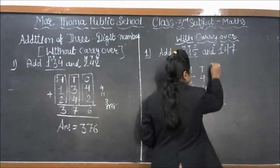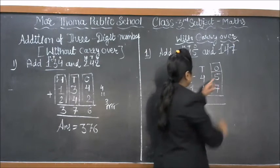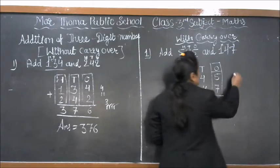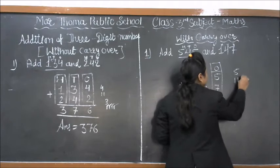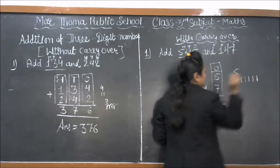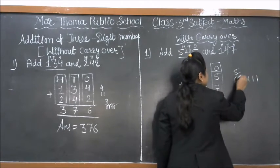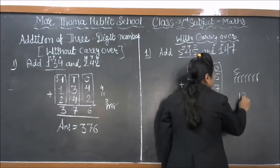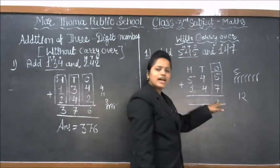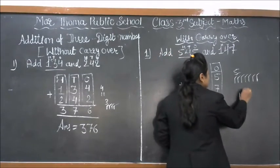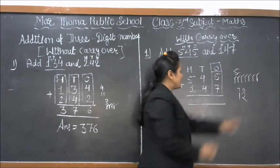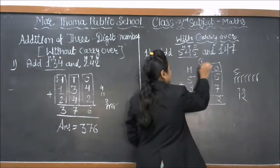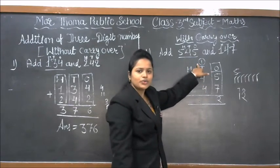First we add the ones column: 5 plus 7. Keep 5 in mind and draw 7 lines: 1, 2, 3, 4, 5, 6, 7. Counting on from 5: 6, 7, 8, 9, 10, 11, 12. So we have 12. The digit 2 goes in ones place and 1 is the carry over.